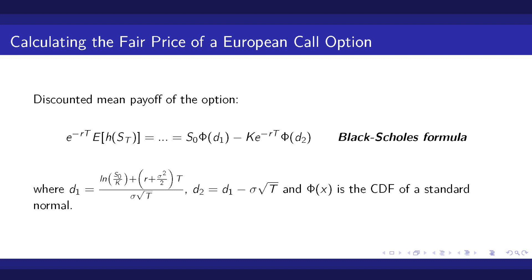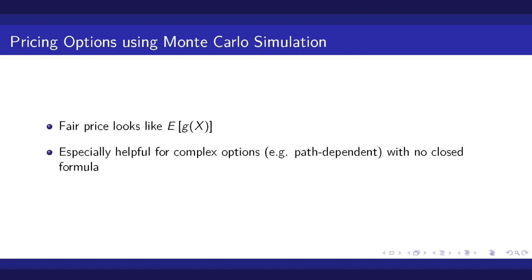Since the fair price is based on an expected value, we can also use Monte Carlo simulation for the pricing of options. We see that the formula to calculate the fair price looks similar to our general problem of the Monte Carlo simulation. Here, the discounted payoff function is the g function in the general case. Monte Carlo simulation is especially helpful for pricing complex options,